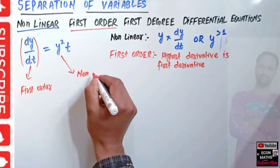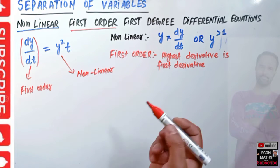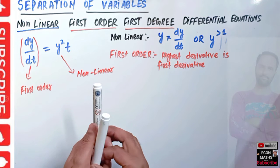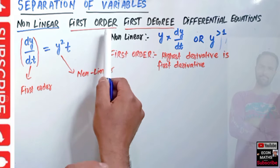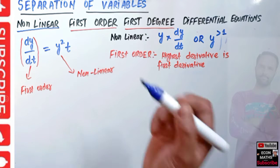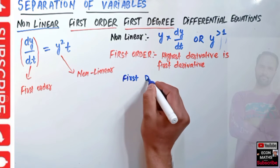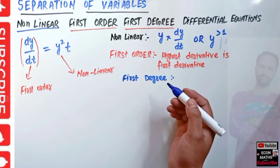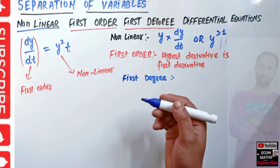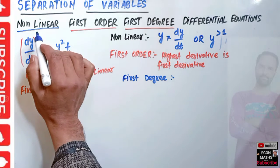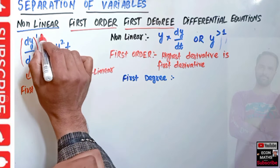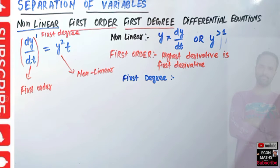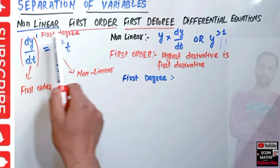Now let me explain first degree. First degree simply means when the highest derivative is raised to the power one. Here you can see the highest derivative dy/dt is raised to power one, so it is of first degree. This was some conceptual discussion. Now, given a nonlinear first-order first-degree differential equation, if it is possible to separate variables, we can solve it.